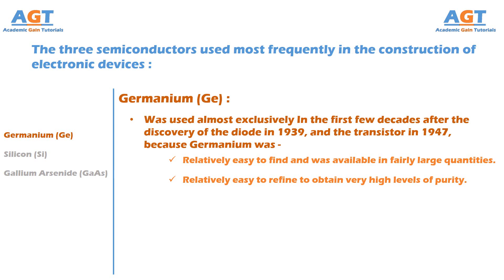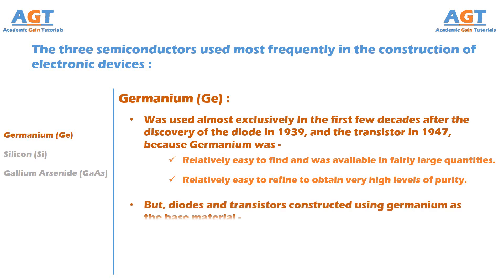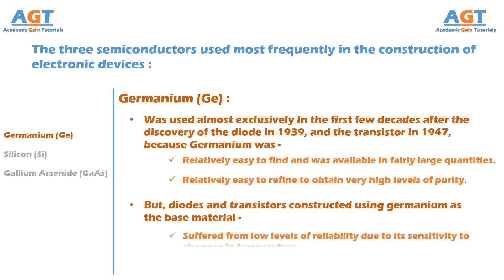However, it was discovered in the early years that diodes and transistors constructed using germanium as the base material suffered from low levels of reliability due to its sensitivity to changes in temperature.